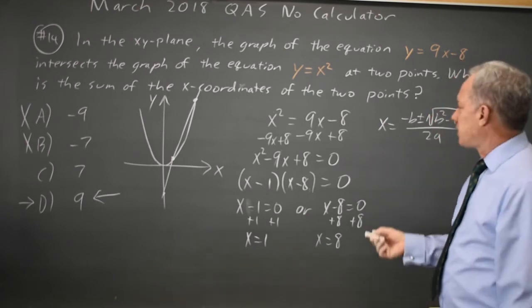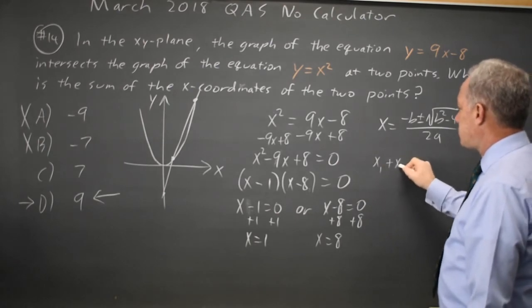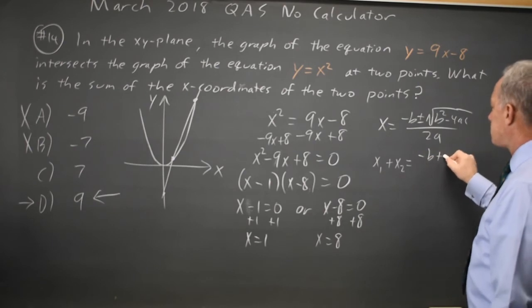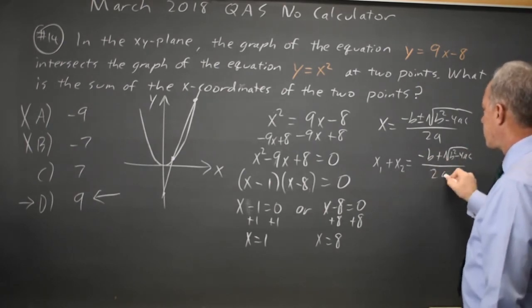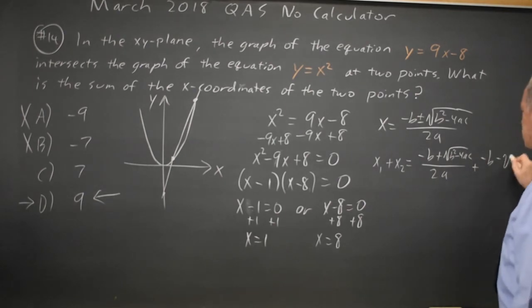If I do that in the abstract, I get x1 plus x2. The sum of the two is negative b plus the square root and then plus negative b minus the same square root, all over 2a.